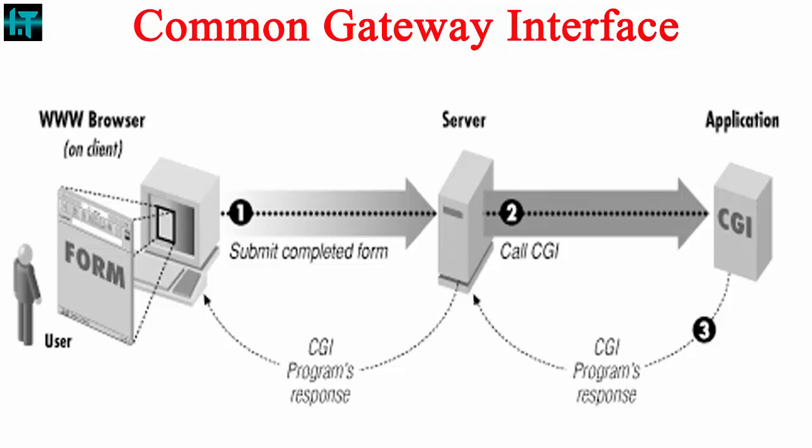This URL could be typed into the location window of a browser, be a hyperlink, or be specified in the action attribute of an HTML form tag. Step two — from the URL, the web server determines that it should activate the gateway program listed in the URL and sends any parameters passed by the URL to that program. Step three — the gateway program processes the information and returns HTML text to the web server.